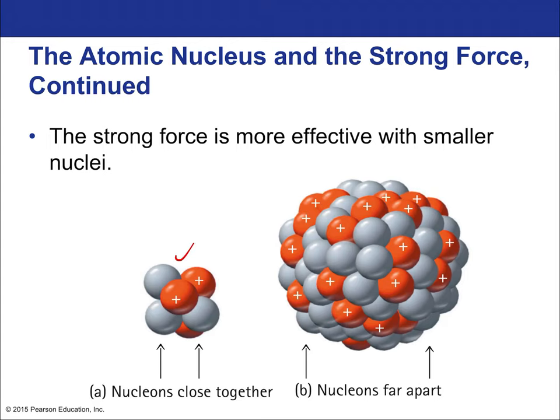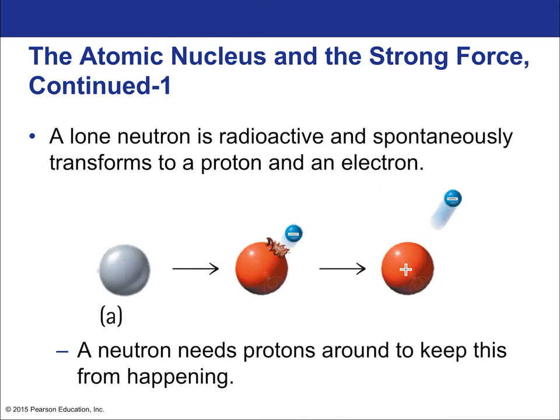The strong force is more effective with smaller nuclei. For large nuclei that are 10 or 20 times bigger than hydrogen, the nucleus is pushing the limits of the strong force's ability to hold it together. This relates to nuclear fission — splitting the atom is possible because all you need to do is increase the distance between nucleons beyond the short range of the strong force.